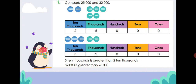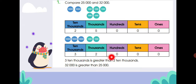When comparing, always start from the left side. Here we have two ten-thousands and three ten-thousands. Three ten-thousands is greater than two ten-thousands, so thirty-two thousand is greater than twenty-five thousand.